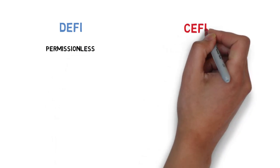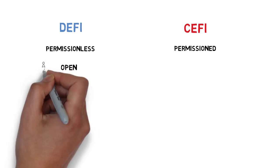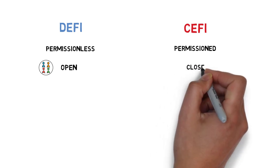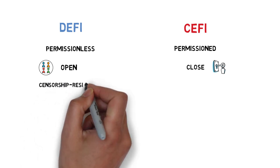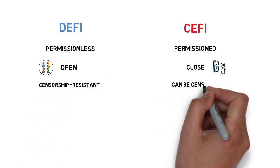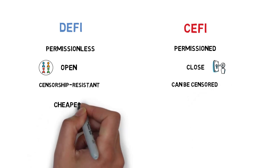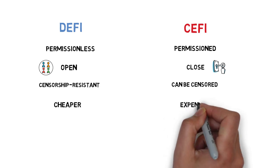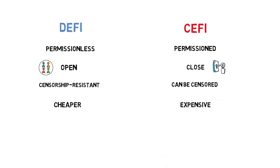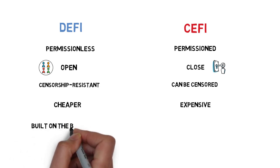DeFi: permissionless, no KYC. CeFi: permissioned, KYC, sanctions. DeFi: open, open source, encouraging free collaboration. CeFi: closed, closed source, decisions made behind closed doors. DeFi: censorship resistant. CeFi: can be censored. DeFi: cheaper, mostly network fees. CeFi: expensive, intermediaries charging hefty fees. DeFi: built on the blockchain. CeFi: built on old foundations.